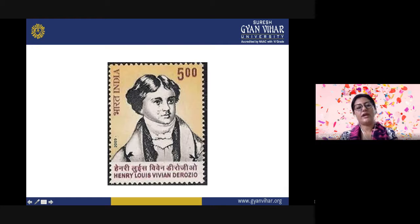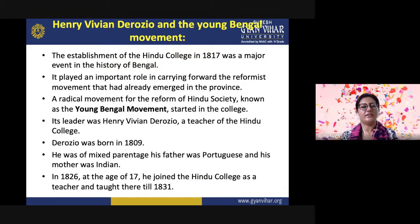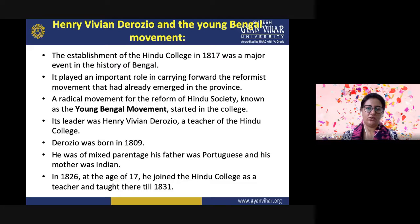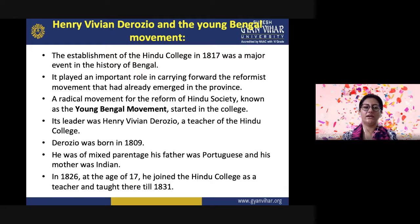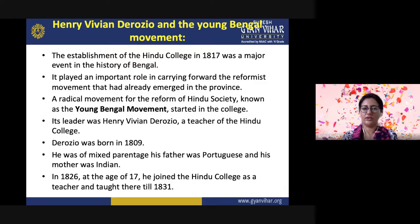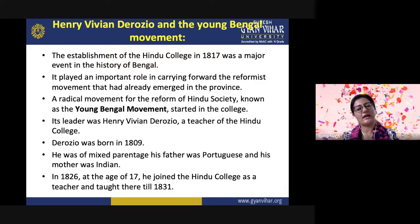Now we will talk about Henry Louis Vivian de Rosio, who started the Young Bengal Movement. With the establishment of Hindu College in 1817 — in which Raja Ram Mohan Roy was also a member — a radical movement for the reform of Hindu society known as the Young Bengal Movement started. Henry Vivian de Rosio was a teacher at Hindu College. He was born in 1809 of mixed parentage — his father was Portuguese and his mother was Indian. In 1826, at the age of 17, he joined the Hindu College as a teacher and taught there till 1831.